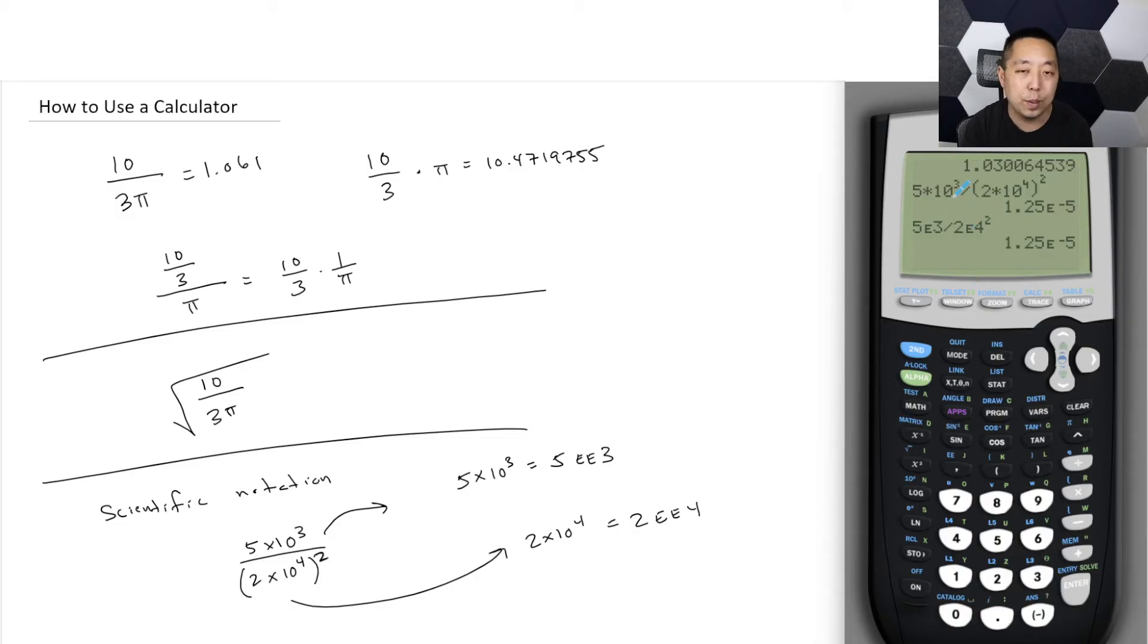And when there's fewer button presses, it minimizes your chance of mistake. It's also easier to read what you're doing once you get comfortable with it. And so that's what this notation here is, my answer here is 1.25 times 10 to the negative 5. So you'll see that here as a result. The E stands for exponent, so it's exponent base 10, basically.